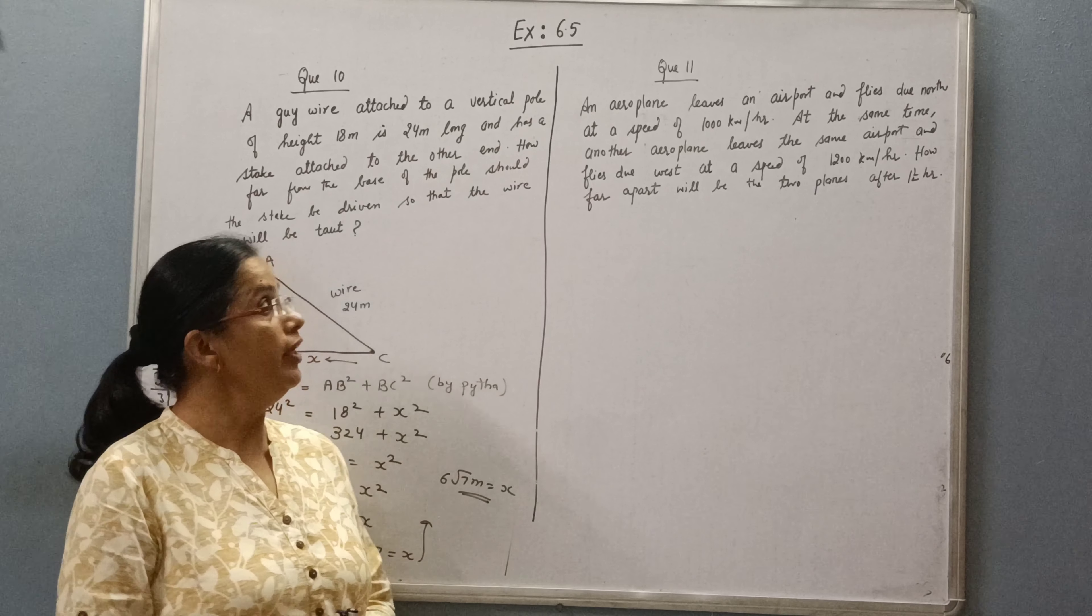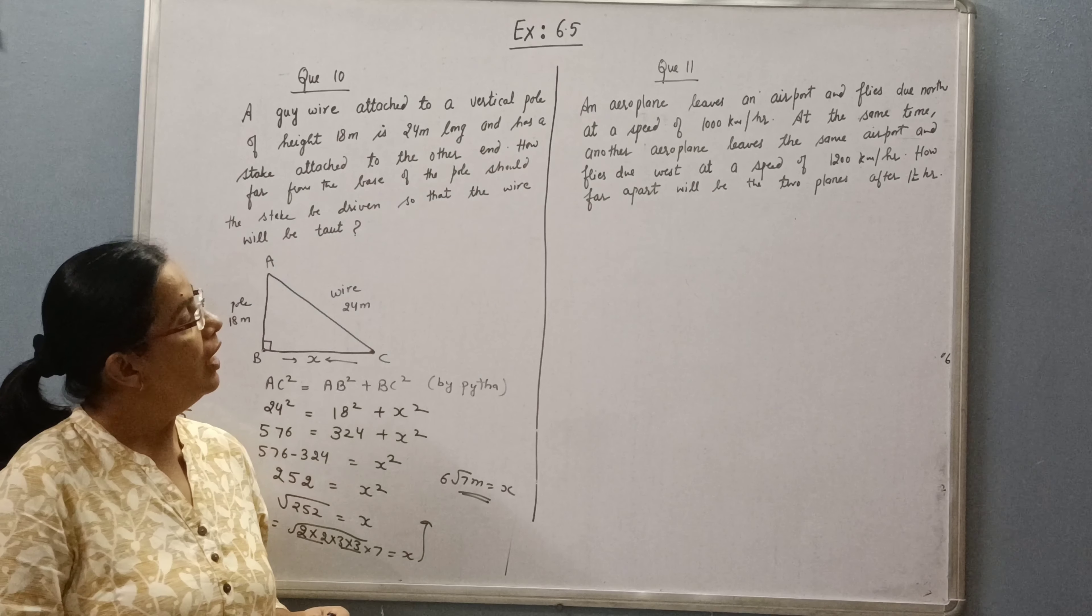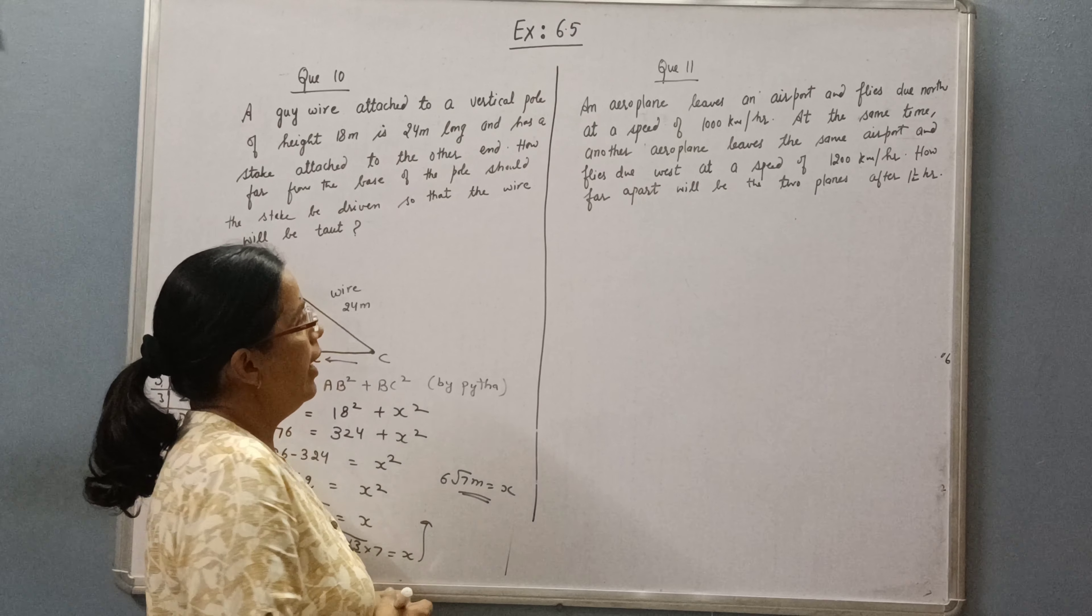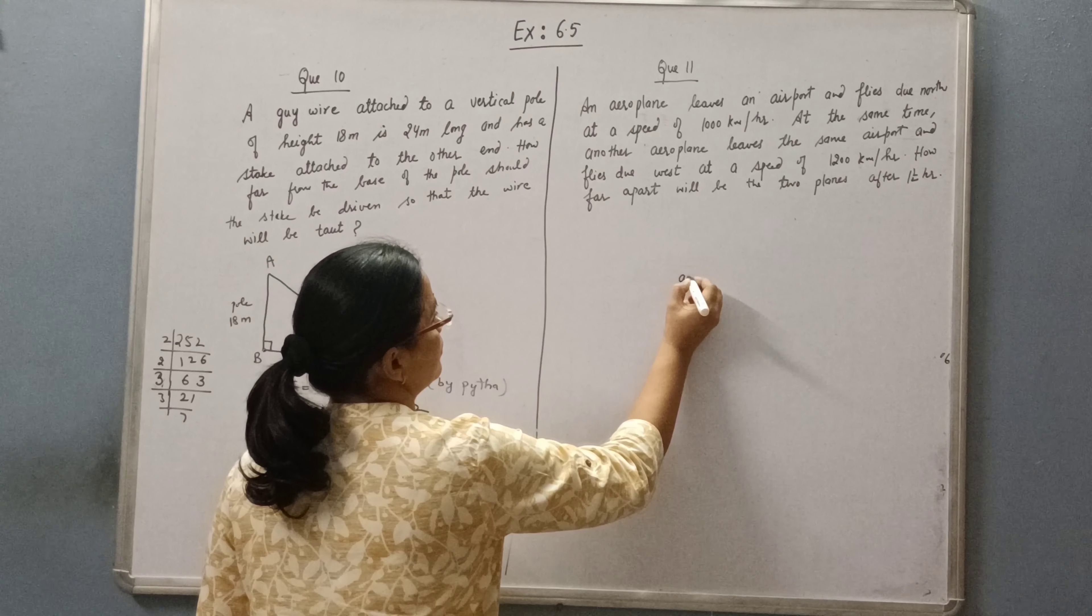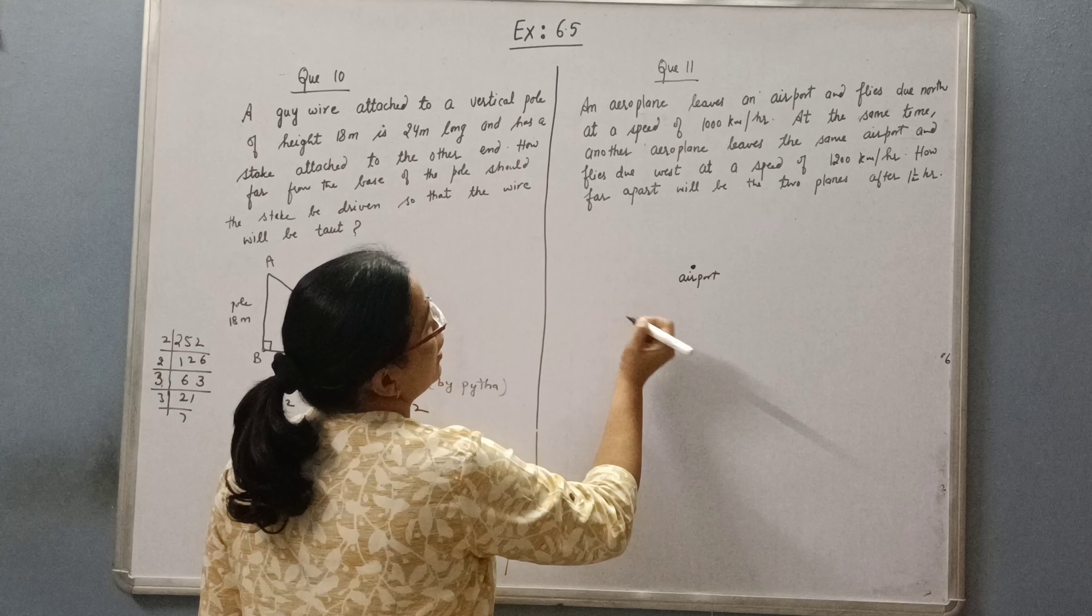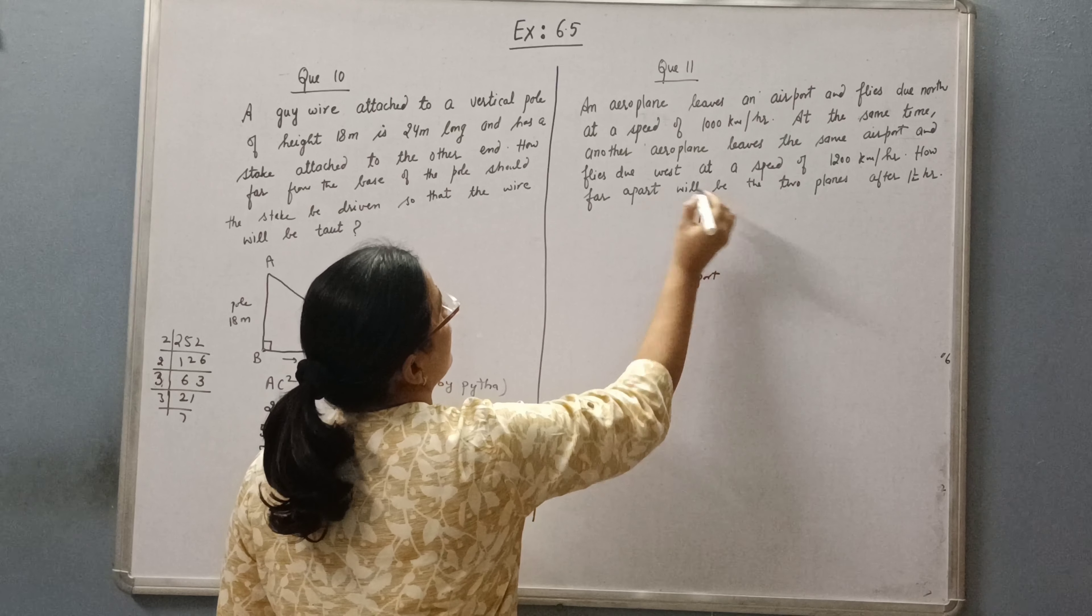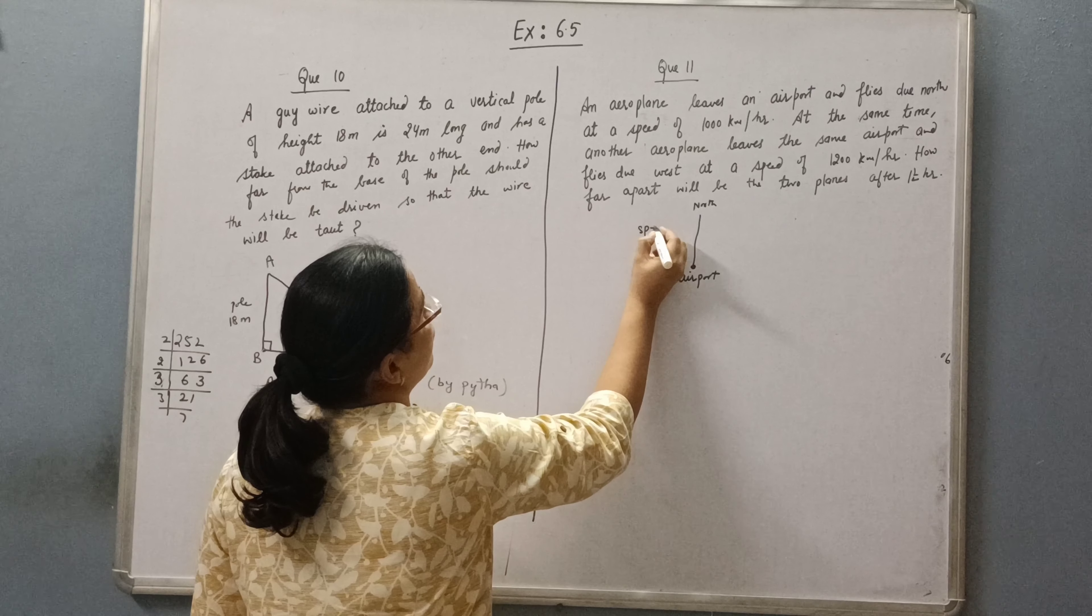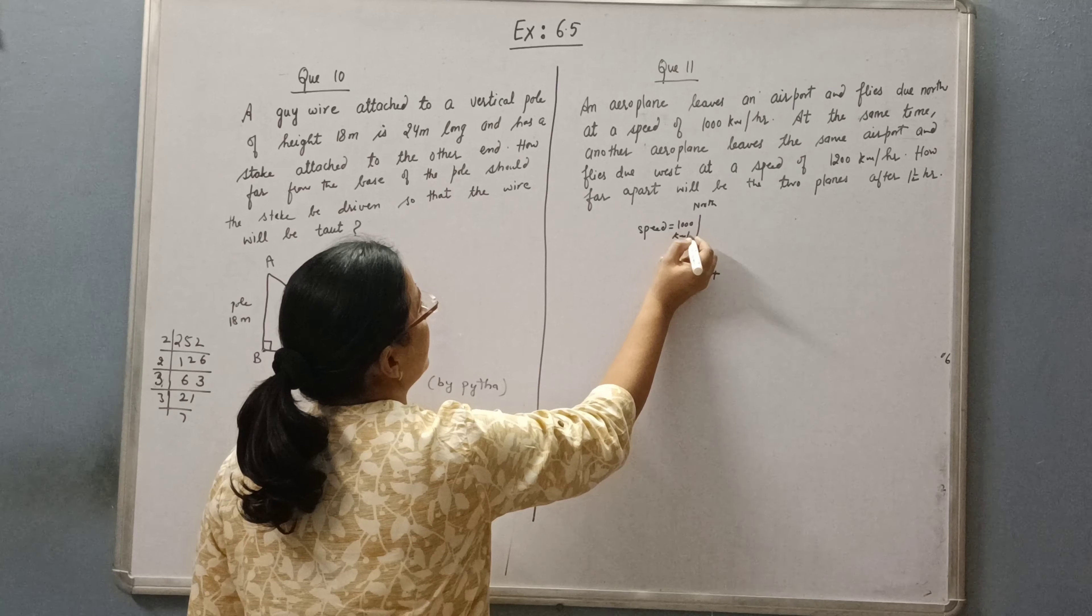Greetings everyone. Today we will do question 11 of exercise 6.5. The question is: an aeroplane leaves an airport and flies due north.